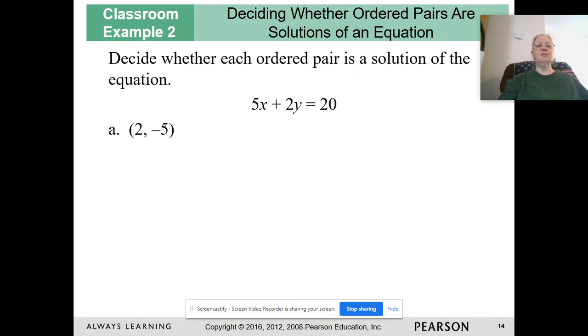Decide whether each ordered pair is a solution of the equation. So we're trying to figure out if this ordered pair is a solution to this equation. We do this by plugging these numbers in. We're going to plug this in for x and this in for y. We're going to simplify each side. Once we have a single number on the left side and a single number on the right, we're going to compare those two numbers. If those two numbers are equal, then we have a solution. If they are not equal, it's not a solution.